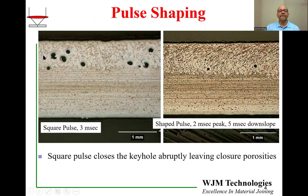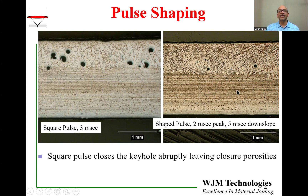Here is an example of pulse shaping. On the left I am showing a seam weld — a lateral section through multiple overlapping spots — and you can see a lot of porosity in the bottom half of the weld, which is a very common feature of keyhole closure porosity. These pulses were square pulses for three milliseconds. To reduce the porosity, we shortened the time at peak power to two milliseconds and introduced a five millisecond downslope. The gradual closing of the keyhole allowed the gases to escape and the keyhole to close without producing any porosity, resulting in very small porosity compared to before.